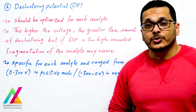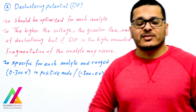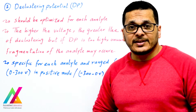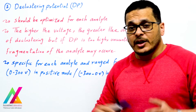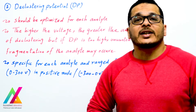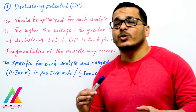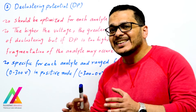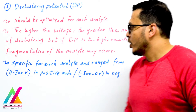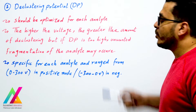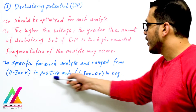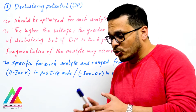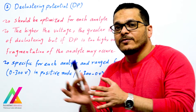The declustering potential (DP) is a very important parameter in your acquisition method. It should be optimized for each target analyte because there will be a specific DP for each analyte. The higher the voltage applied, the greater the declustering of solvent cluster ions. However, if you increase DP more than enough, your analyte ions may also be fragmented. So you must find the optimum DP for each target analyte, ranging from 0 to 300 volts in positive mode and from minus 300 to 0 volts in negative mode.